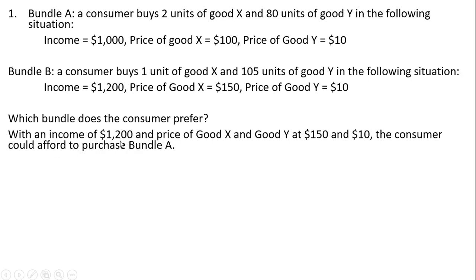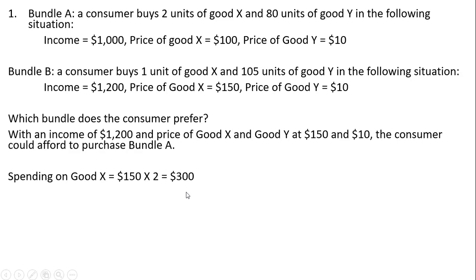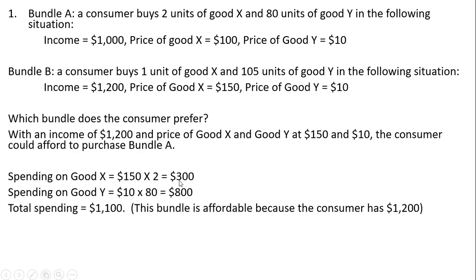So let's start with this idea. With an income of $1,200 and the price of good X and price of good Y at $150 and $10 respectively, the consumer can afford to purchase bundle A. Taking the price of $150 and multiplying by the quantity of good X in bundle A, the consumer would spend $300 on good X. Then the spending on good Y — the price is $10 and the consumer bought 80 units in bundle A — the consumer would spend $800. So the total spending here is $1,100.